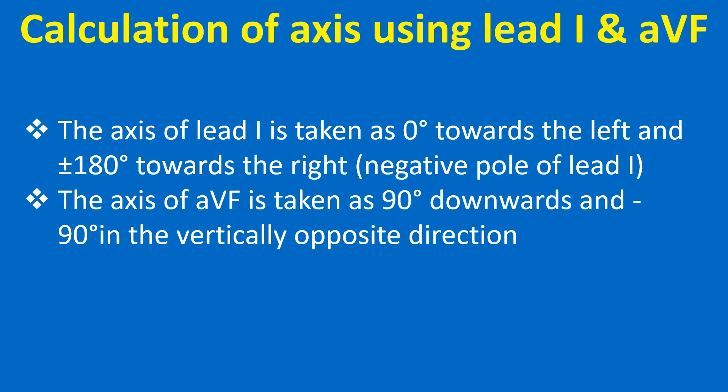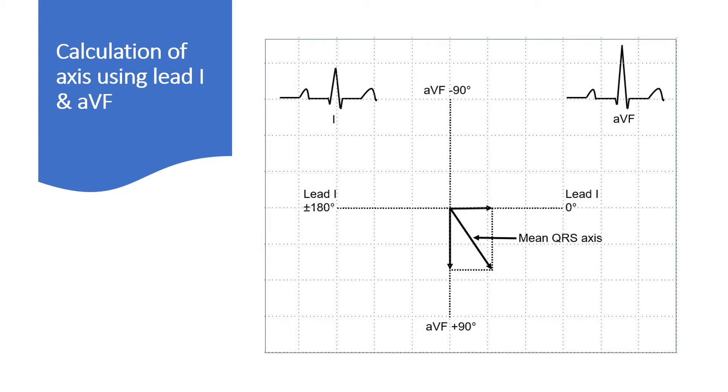For calculation of axis using lead 1 and AVF: the axis of lead 1 is taken as 0 degrees towards the left and plus or minus 180 degrees towards the right, which is the negative pole of lead 1. The axis of AVF is taken as 90 degrees downwards and minus 90 degrees in the vertically opposite direction. Mean QRS amplitude of lead 1 and AVF are plotted along the corresponding axis, and the resultant is taken as the mean QRS axis.